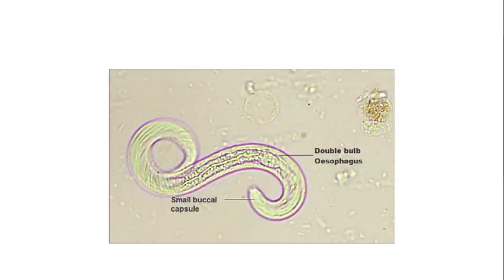This worm possesses a long double-bulb esophagus intertwined with its uterus, giving the appearance of intertwined threads — hence the name threadworm. Quick disclaimer: in some countries, the common name threadworm is also used to describe another nematode called Enterobius vermicularis, otherwise known as the pinworm.